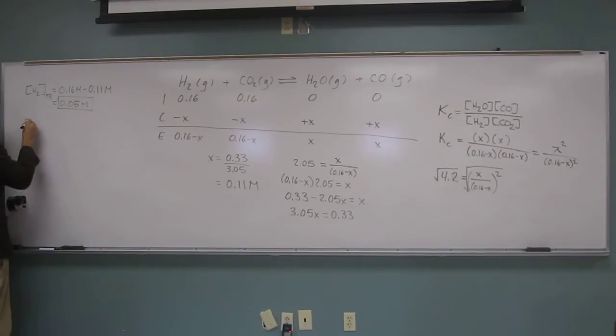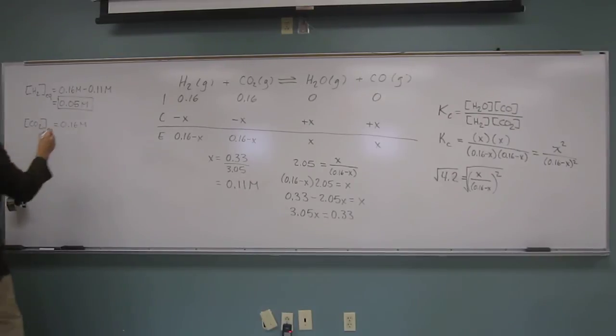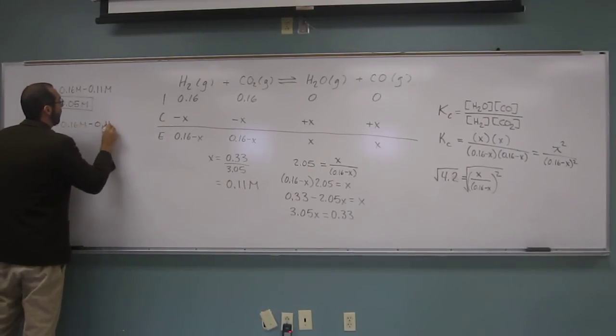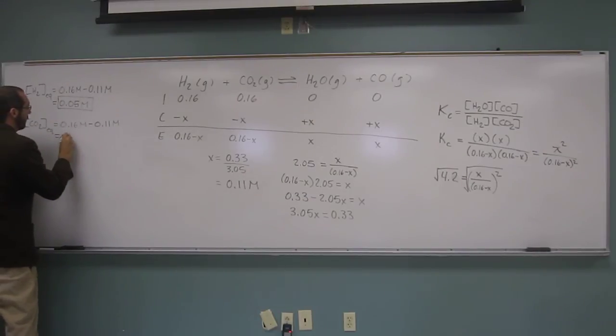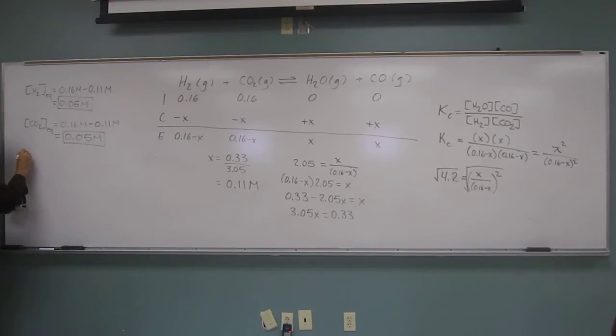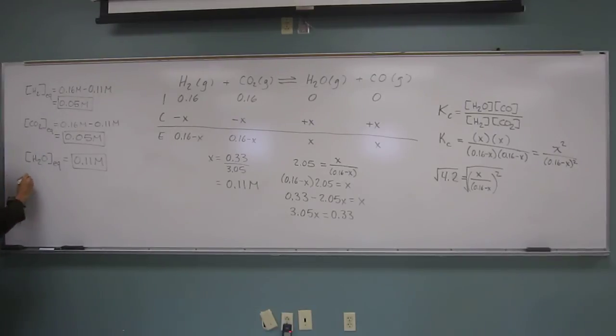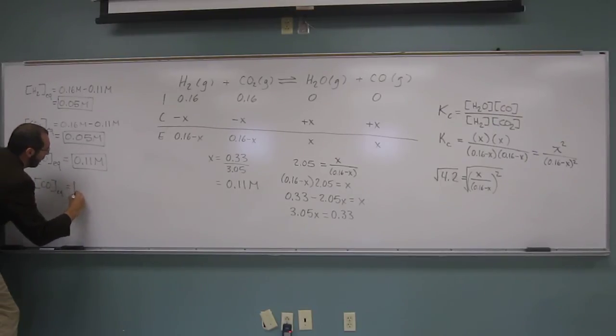Okay. So the concentration of CO2 at equilibrium is going to be the same, 0.16 molar minus 0.11 molar, which equals 0.05 molar. And then the concentration of H2O at equilibrium, well that equals x, right? So that's going to be 0.11 molar. And the concentration of carbon monoxide at equilibrium is also x, so it's also 0.11 molar.